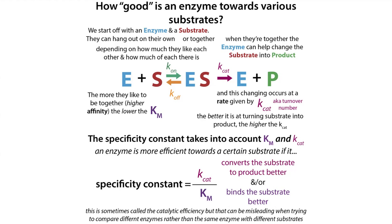If our Km is higher, that means weaker binding. If our Kcat is higher, that means better turnover. Looking at the specificity constant — Kcat over Km — if you have weak binding, you have a big Km, which makes the specificity constant lower. Whereas if you have tight binding, Km is smaller, making the specificity constant bigger. If Kcat is bigger, since it's in the numerator, the specificity constant will be bigger as well.